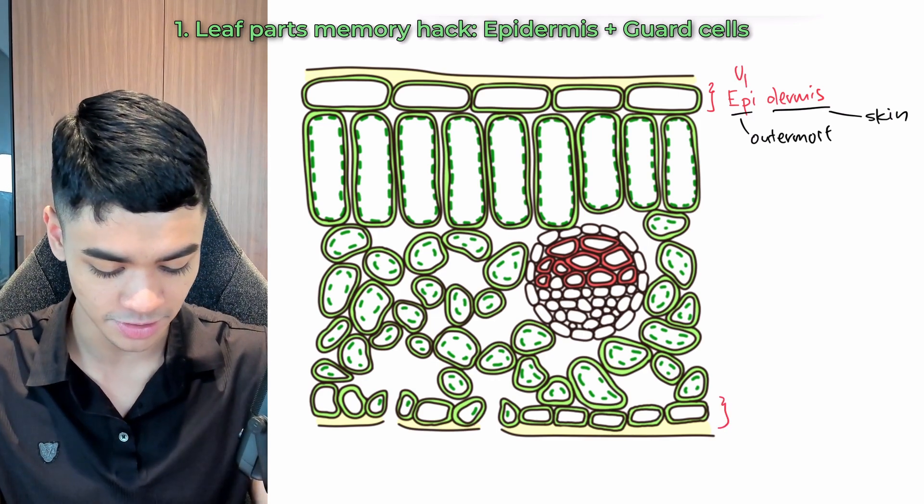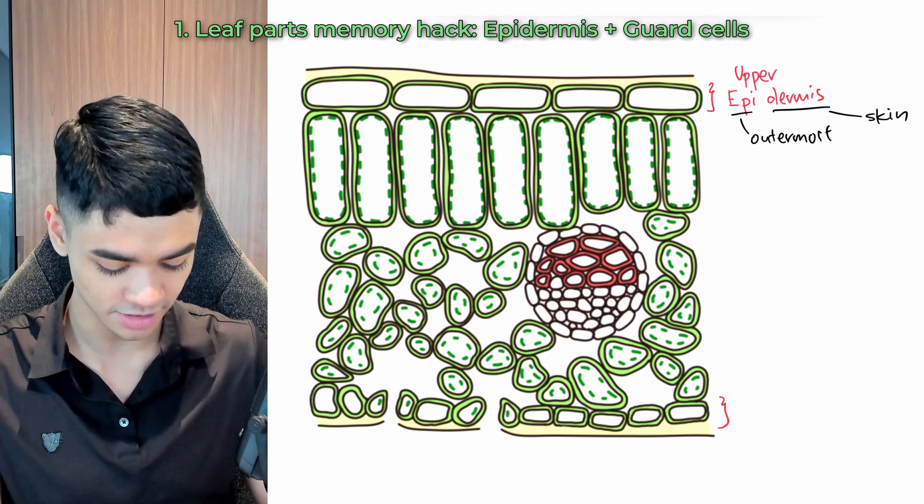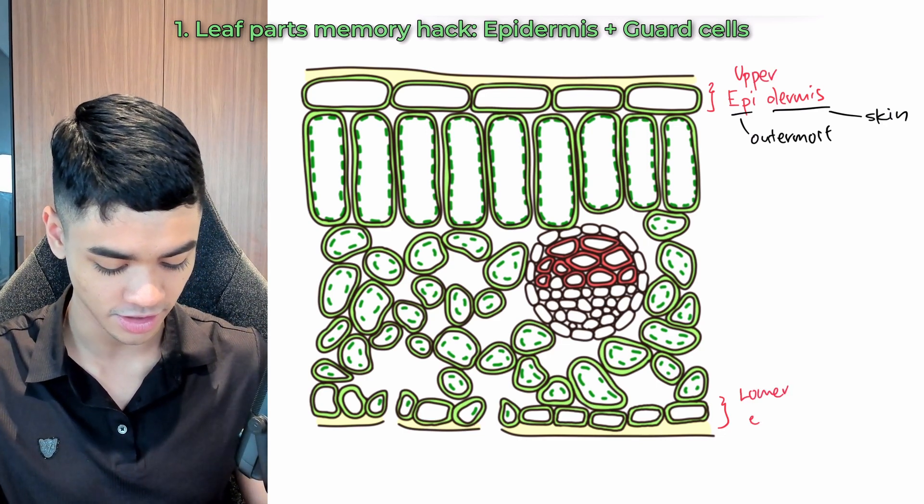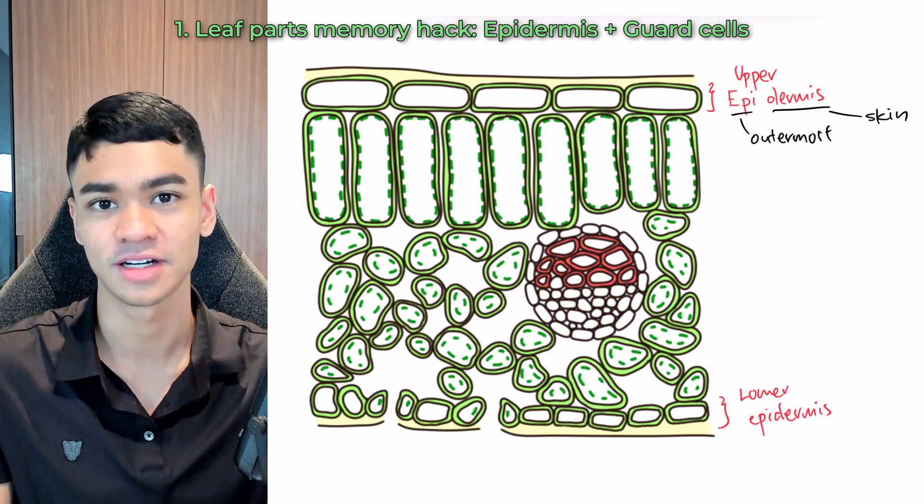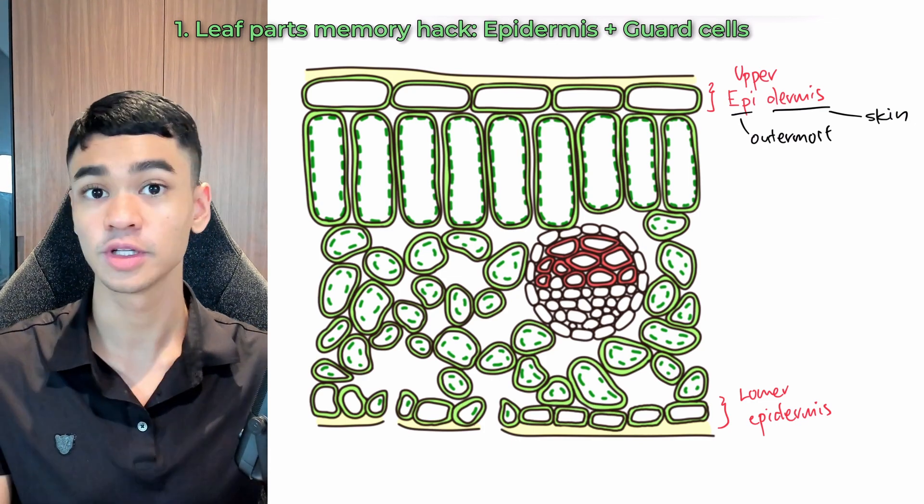And you find it at the top and also at the bottom layer. So for the one at the top, we call it upper epidermis, and then the lower one, we call it lower epidermis. Okay, so you already got two layers out of the four memorized.